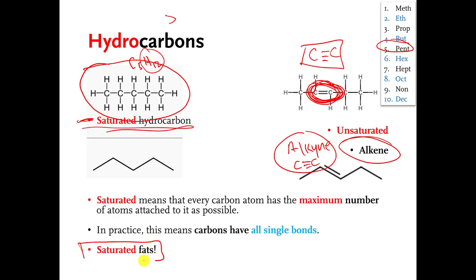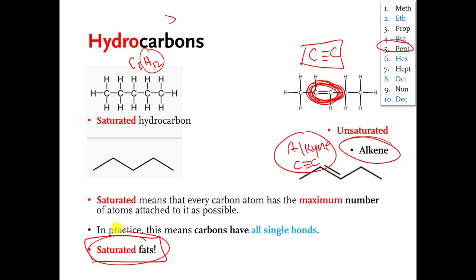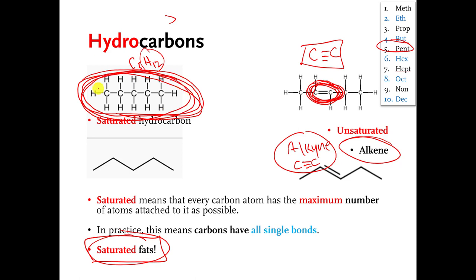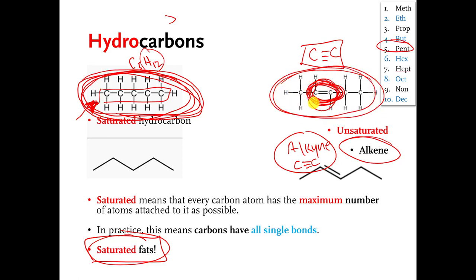If you've heard of saturated fats and unsaturated fats, the saturated and unsaturated here is related to what I am talking about. With saturated fats, you have a fat molecule where part of the molecule is a bunch of carbons and hydrogens, all single bonds, and there are as many hydrogens on those carbons as you can put on them. With unsaturated fats, the fat molecule has a carbon-hydrogen area where there's at least one carbon-carbon double or triple bond, and that removes a certain number of hydrogens from that part of the fat molecule.